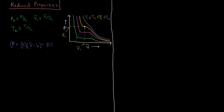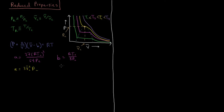In terms of the critical properties, we can solve for A and B. We can express them in terms of the critical temperature and critical pressure: A equals 27RT_C² over 64P_C, and B equals RT_C over 8P_C. We can also write these in terms of the critical volume and critical pressure: A equals 3V̄_C²P_C, and B equals V̄_C over 3. These are just different representations of the same values.